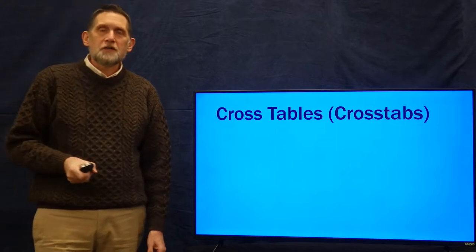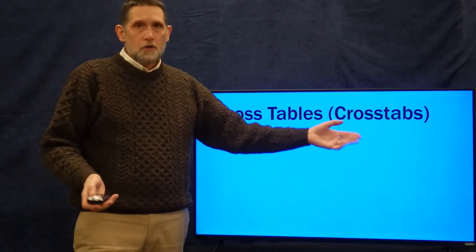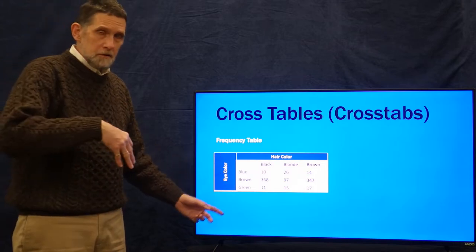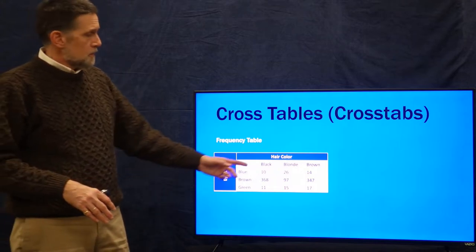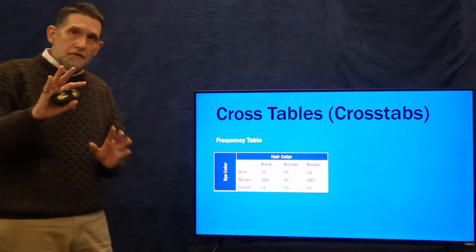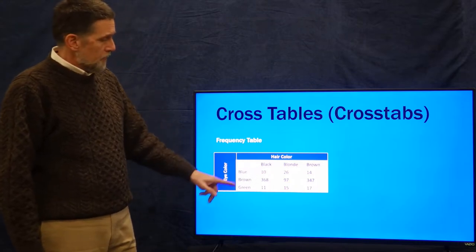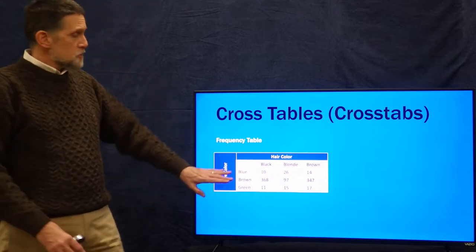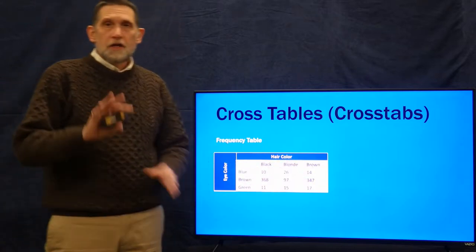More commonly, what we do with nominal data is create tables. We have a regular frequency table, but very often with nominal data we do cross tables, or cross-tabulations, of two variables. Here we have eye color — blue, brown, and green — and another variable, hair color — black, blonde, or brown. This shows us the counts of individuals in the sample that have blue eyes and black hair: there are 10. Black hair and brown eyes: there are 368. Brown eyes and blonde hair: there are 97. This is a frequency table showing the frequencies of individuals in varying groups.